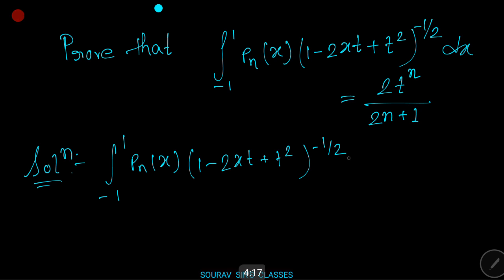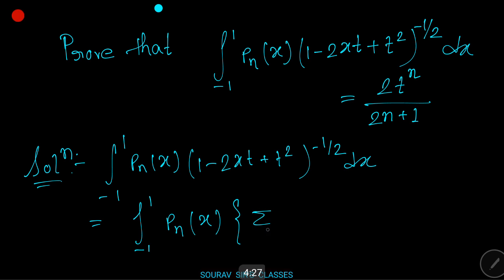Solution. The left hand side is: integration from minus one to plus one of Pn(x) times (1 minus 2xt plus t squared) to the power of minus one half dx. That equals integration from minus one to plus one of Pn(x) times summation of t to the power n times Pn(x) dx.